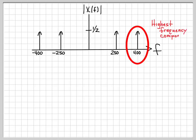From this picture, it's very easy to identify the highest frequency component. There is the largest frequency on this plot. It's the furthest to the right on the frequency axis. So the highest frequency component, what we call f_max, is 400 hertz.